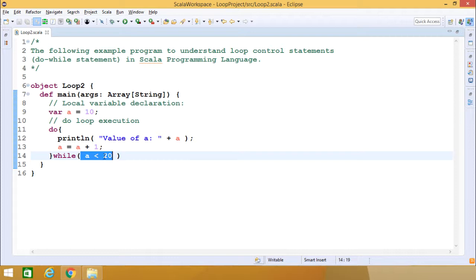Now 11 is less than 20, so again the loop will be executed. When this value of a becomes 20, then 20 less than 20 becomes false, so the loop cannot be executed. That means this value of a will get printed from 10 to 19.